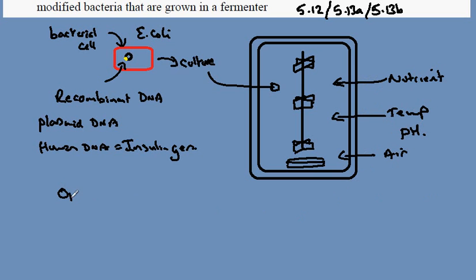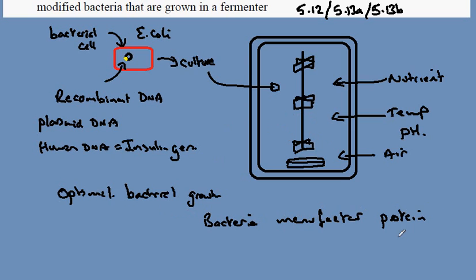By creating the optimal temperature for bacterial growth, we will see this population increase. We will see the bacteria switch on the gene for insulin and manufacture the protein insulin.